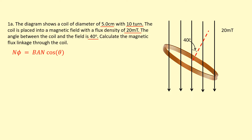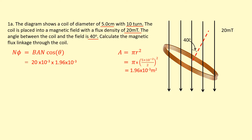I'll use the flux linkage equation. First, let's find the area of the coil: pi r squared — so pi times the radius, making sure to divide the diameter by 2 and convert to metres, then square it. Now putting the numbers in: magnetic flux density is 20 times 10 to the power of minus 3 Teslas, times the area we just calculated, times the number of turns — 10 — times cosine 40 degrees (make sure your calculator is in degree mode). That gives us the flux linkage in Weber-turns.